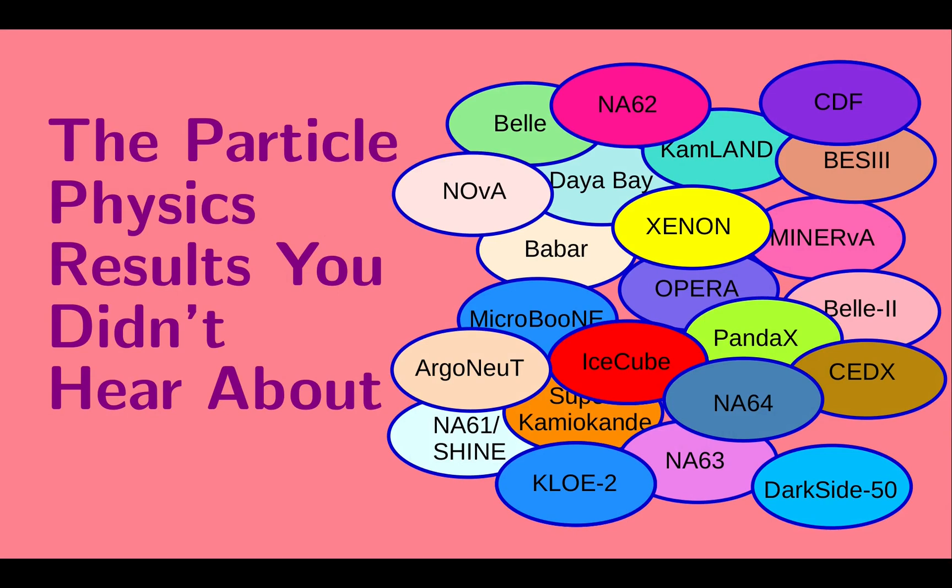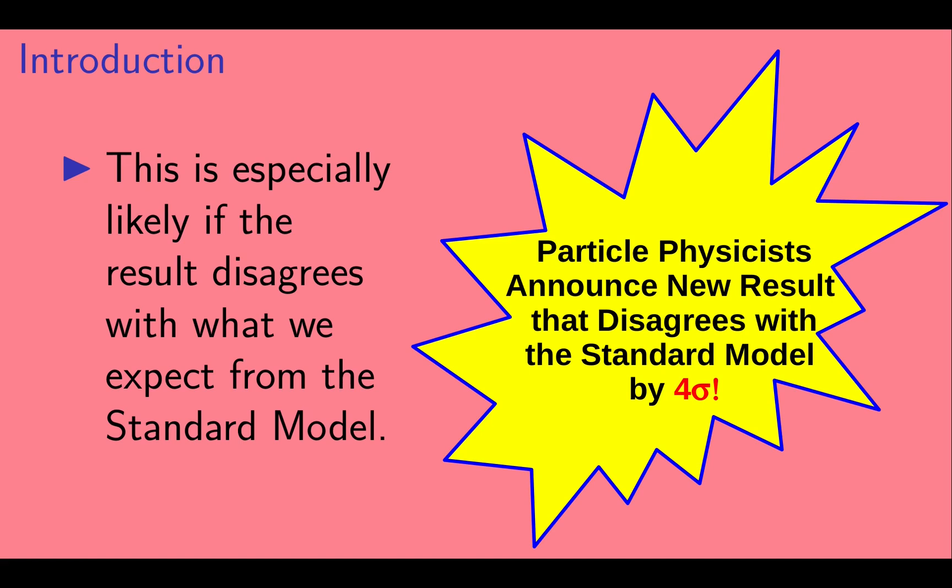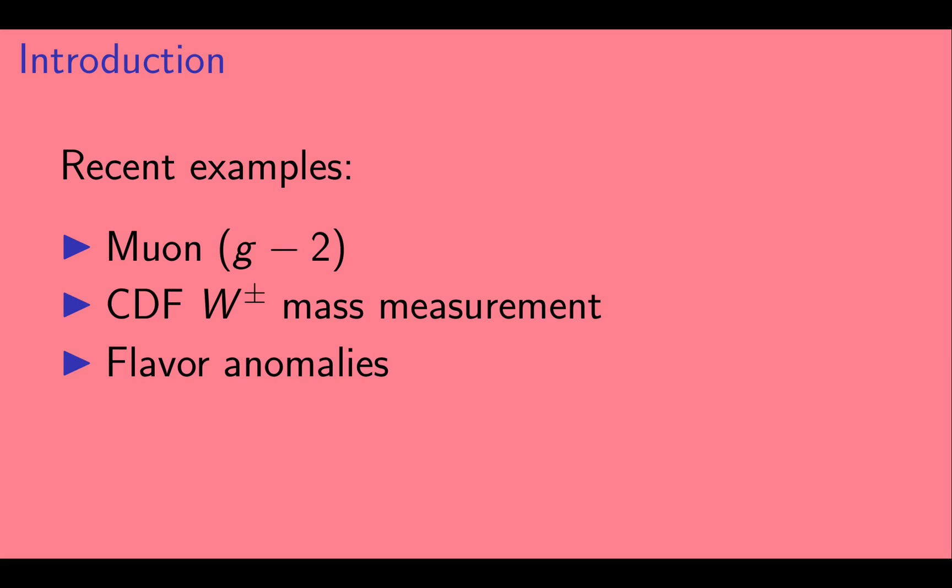Hi, welcome to the particle physics results you didn't hear about. Sometimes experimental results in particle physics make the news. And this is especially likely if the result disagrees with what we expect from the standard model of particle physics. So you might see a story saying that some result disagrees with the standard model by 4 sigma. Some recent examples include the measurement of g-2 of the muon, the measurement of the w boson mass from CDF, and multiple interesting results in flavor observables. There are videos on each of these results on this channel, so check those out if you're interested.